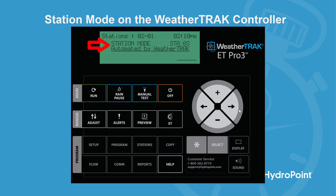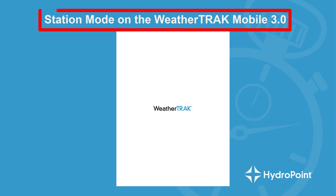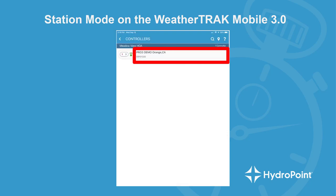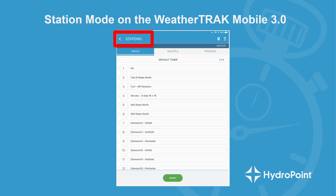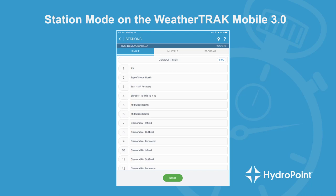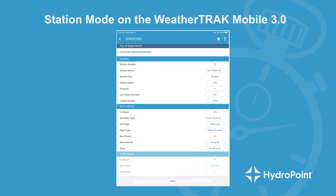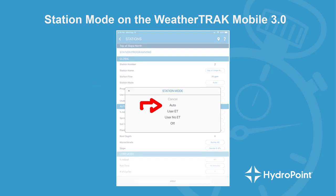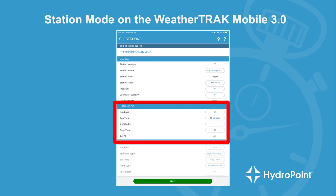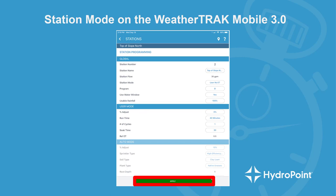The first question it asks you is station mode. You can also change the station mode from WeatherTrack Mobile 3.0 by first selecting the site that you want to manage, then selecting the controller that you want to manage. Once you see the list of stations, pushing the button on the left-hand side — the one that shows the station number — will take you to the station programming for that station. Here you'll find the station mode, where we would switch from auto mode to user mode. When we switch from auto mode to user mode, the auto mode settings would be grayed out and you'll be able to edit the user mode settings.